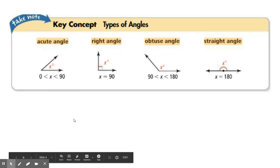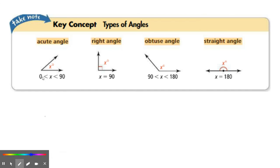Next slide here. We're going to talk about the types of angles. So, there are three basic types, or four basic types of angles. You have acute angles, which are between zero and 90.